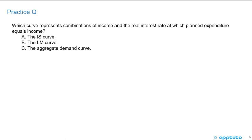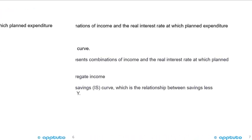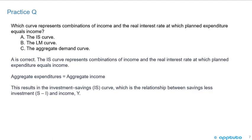The best way to get on top of economics is to do as many practice problems as possible. First question: which curve represents combinations of income and the real interest rate at which planned expenditure equals income? Is it A, the IS curve; B, the LM curve; or C, the aggregate demand curve? A is correct — the IS curve represents combinations of income and the real interest rate at which planned expenditure equals income.